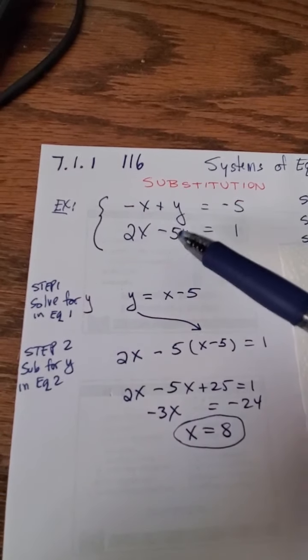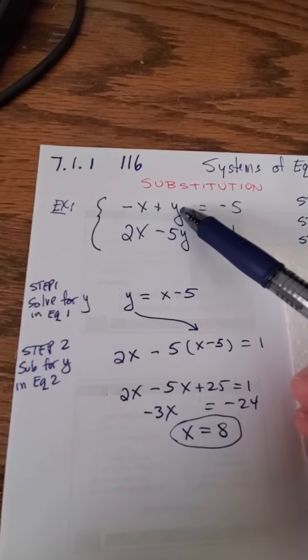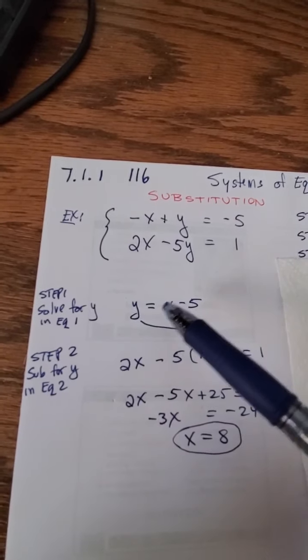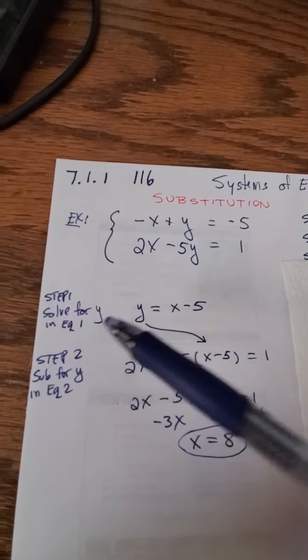For me, solving for y in the top equation seems the easiest. So I just bring the x over to the other side and I get y equals x minus five. That's step one - solve for one variable in one equation.